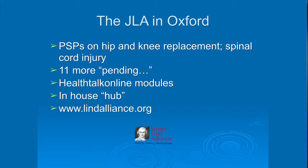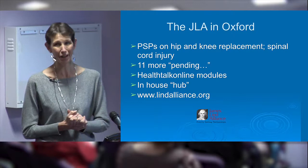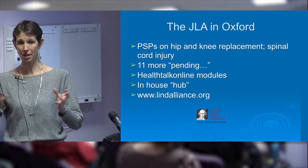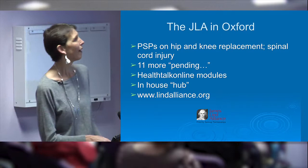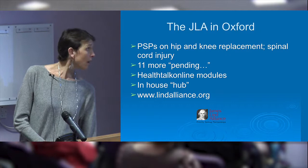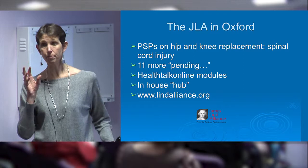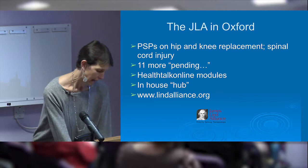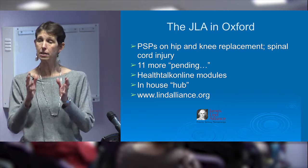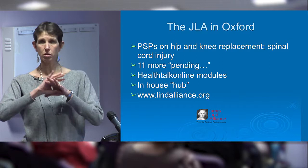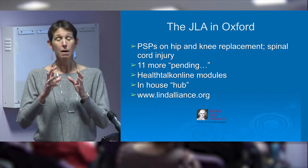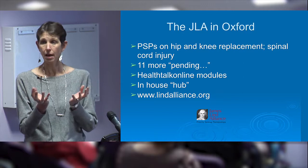The JLA has worked on 17 conditions, from asthma to schizophrenia, eczema, vitiligo, and all sorts of things. We've now got two JLA partnerships underway in Oxford - it's lovely to see some people here tonight who are involved. The first one was on hip and knee replacement; the second is in spinal cord injury. We've got around 11 more pending. Health Talk Online is mentioned here because the BRC funds a health experiences research fellow who is involved with Health Talk Online, which creates modules of patient experience on specific diseases, conditions and healthcare dilemmas.